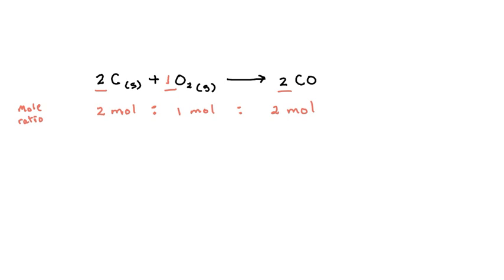Alright, so the next thing I want to do is count up how many of each of these we have. So for the carbon, we have 2, 4, 6, 8, and they're just individual atoms.